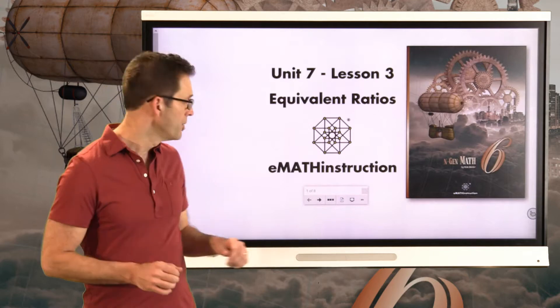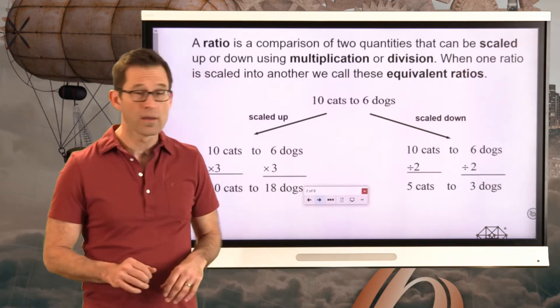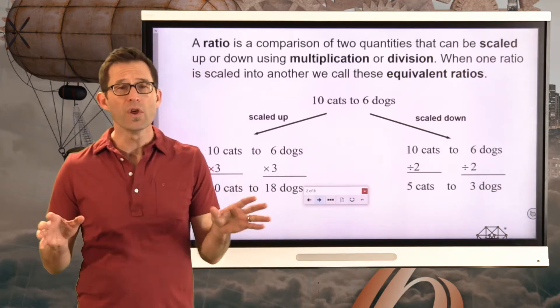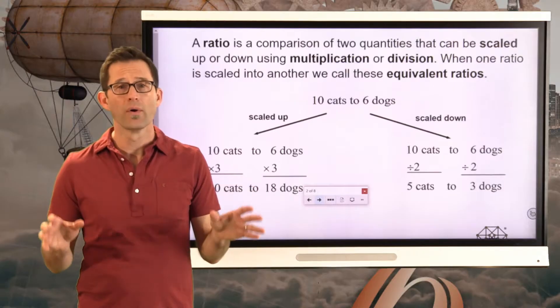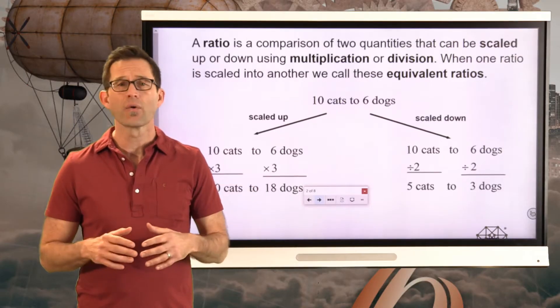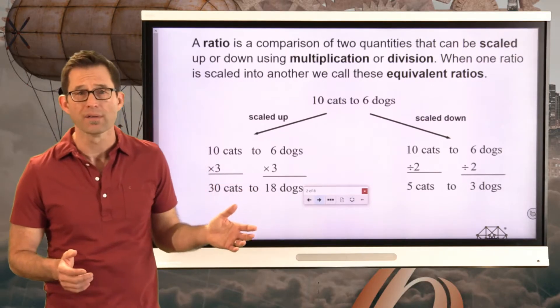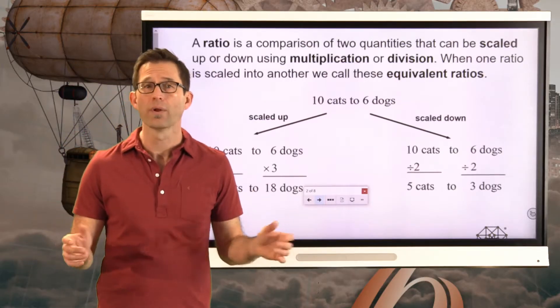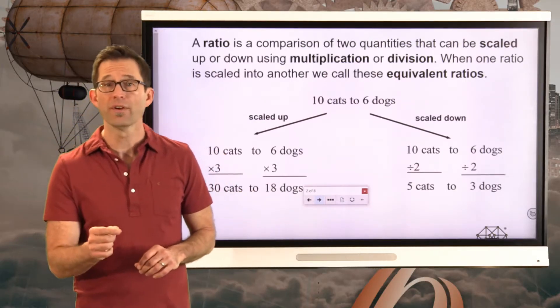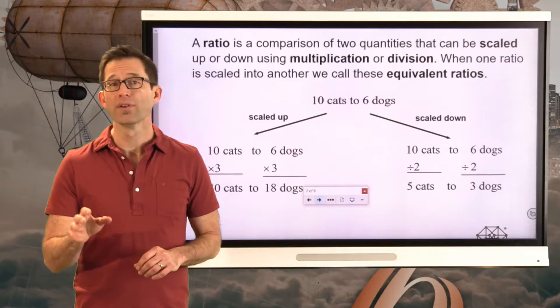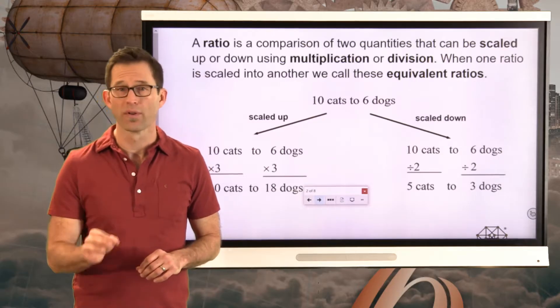So let's jump right into it and introduce a review of how equivalent ratios work. A ratio is just a comparison of two quantities that can be scaled up or down using multiplication or division. When one ratio is scaled into another ratio we call these equivalent ratios.